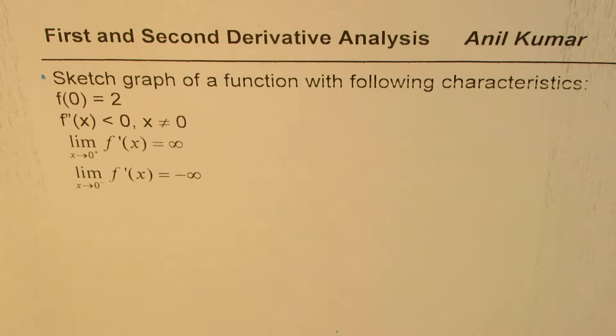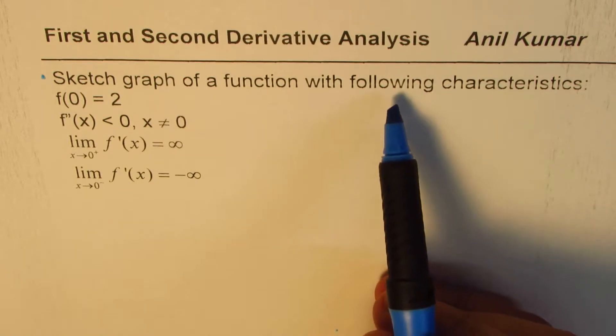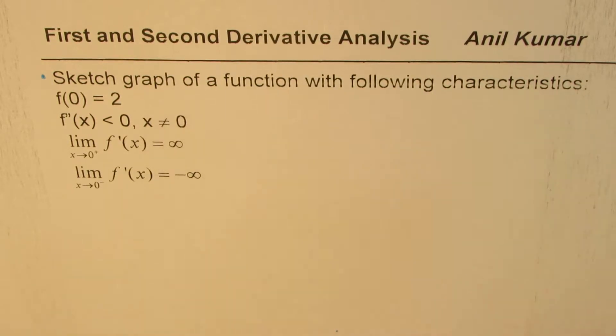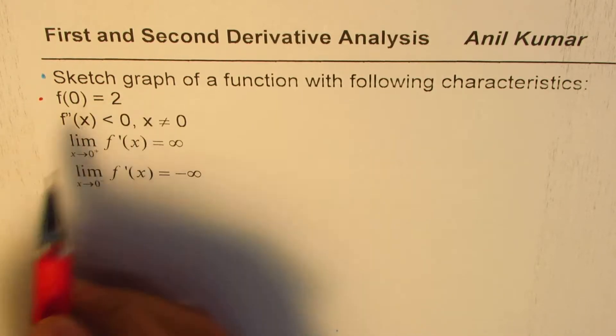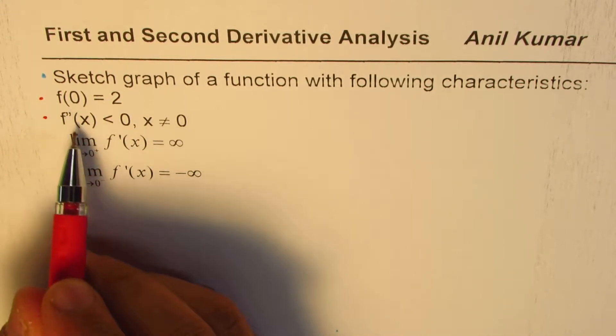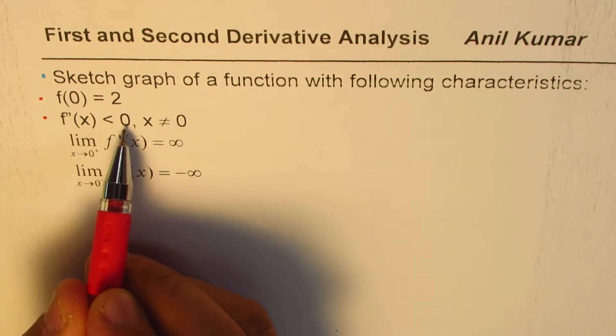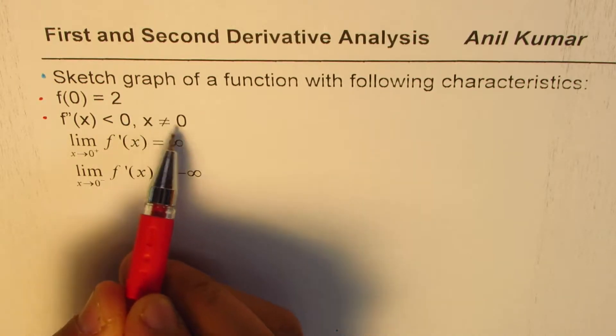The question before us is to sketch the graph of a function with following characteristics. The characteristics given to us are that f(0) is equal to 2, that means the value of the function at 0 is 2. The second derivative of the function is less than 0 if x is not equal to 0.